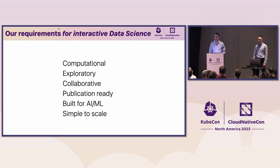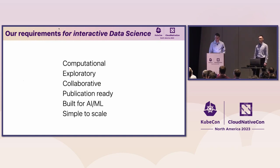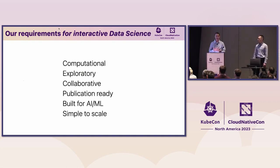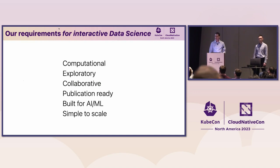We've come up with six key aspects of this kind of experience that we'd like to promote. First, it needs to be computational — obviously by default. Second, exploratory, which speaks to that human-in-the-loop aspect. Third, collaborative by default, so the collaboration experience needs to be smooth. Fourth, publication-ready: ideally, you're not spending months doing science and then months writing a paper separately — those happen simultaneously. Fifth, we need to take advantage of AI and ML. And sixth, it should be simple to scale. We want our data scientists spending their time doing science, not worrying about how to scale their computation — that should be easy and seamless.